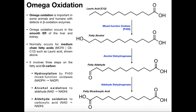Omega oxidation can be important in one of two ways. There are some animals or vertebrates which actually use this more than others, but also if you're a human and you have a defect in one of the beta oxidation enzymes, then this pathway is going to become more important. Recall that beta oxidation is by far the most important of all the fatty acid catabolic pathways for humans. But if one of those four enzymes is defective, then omega oxidation is going to provide a little bit more of a contribution to energy than beta oxidation.